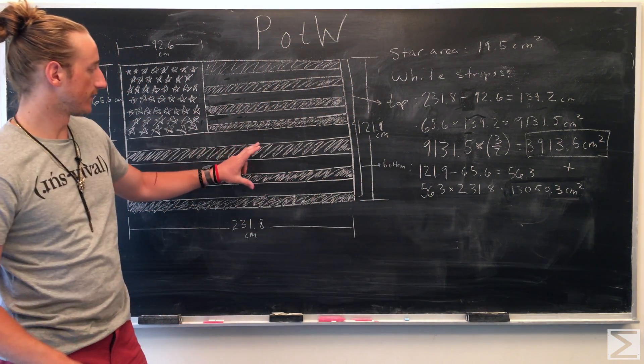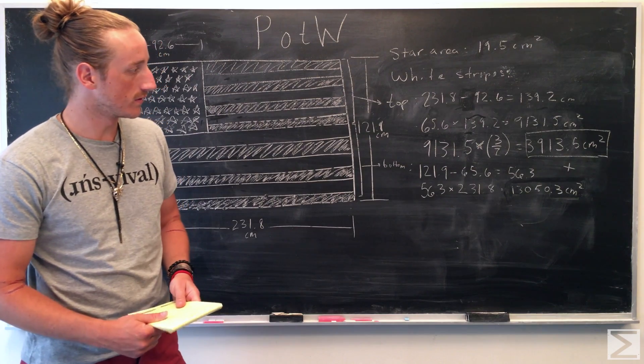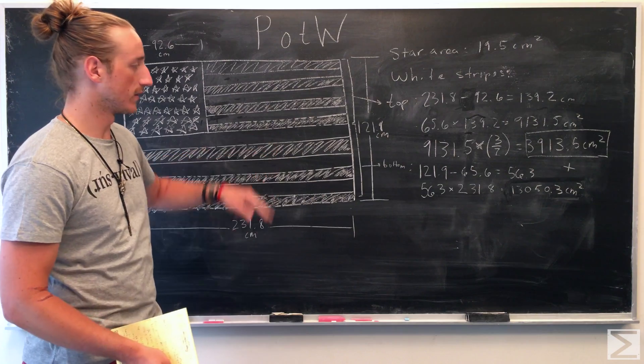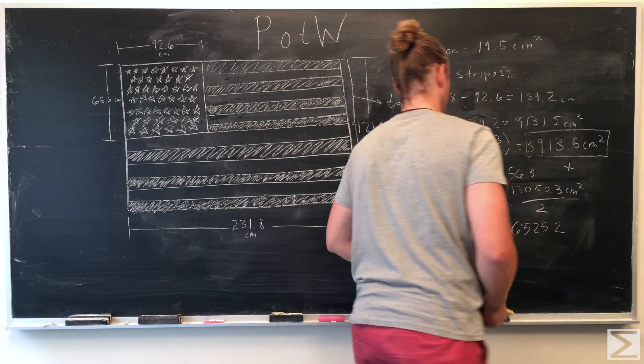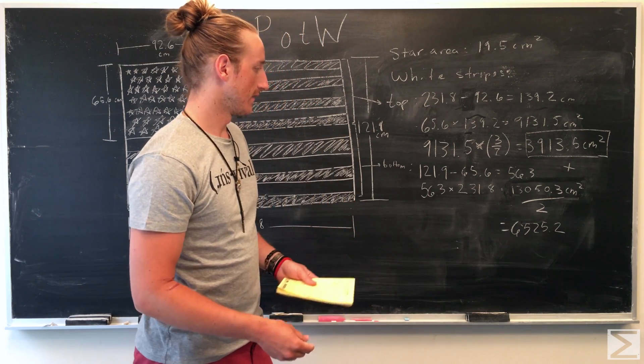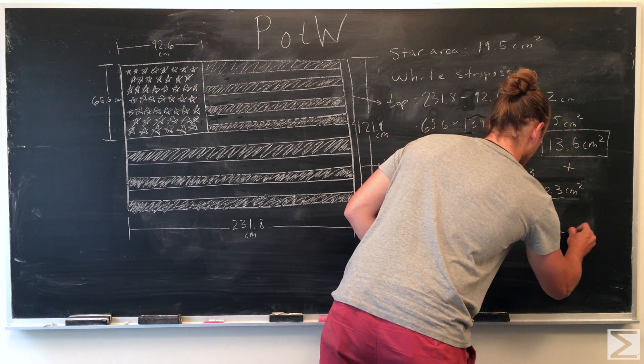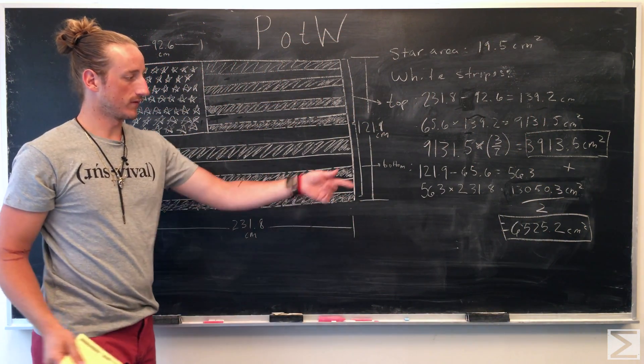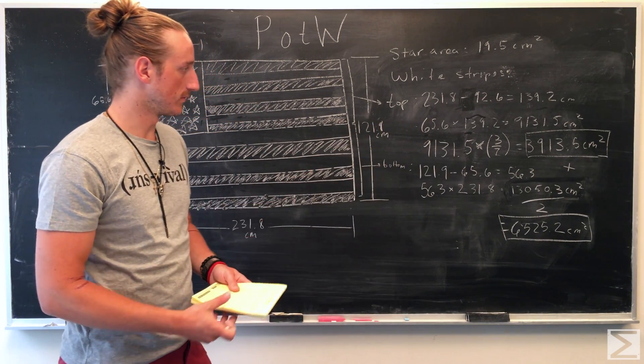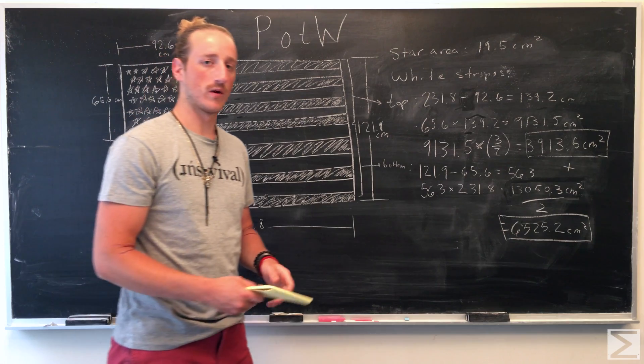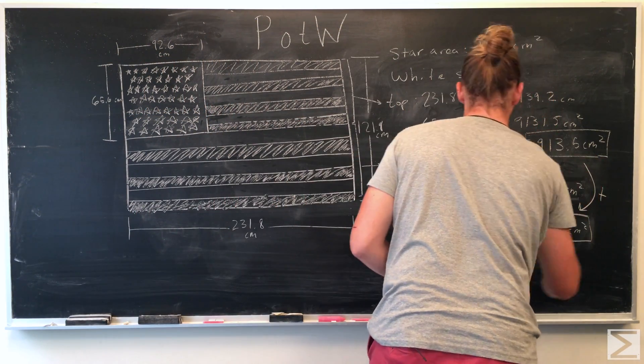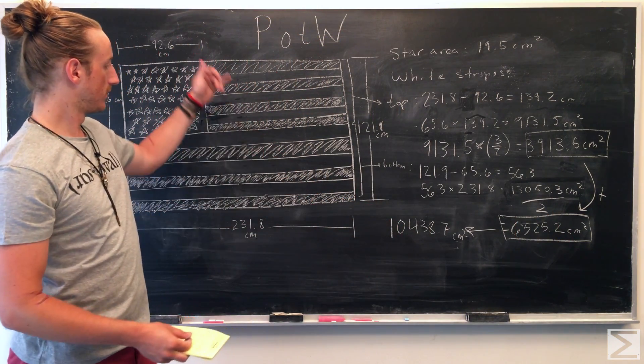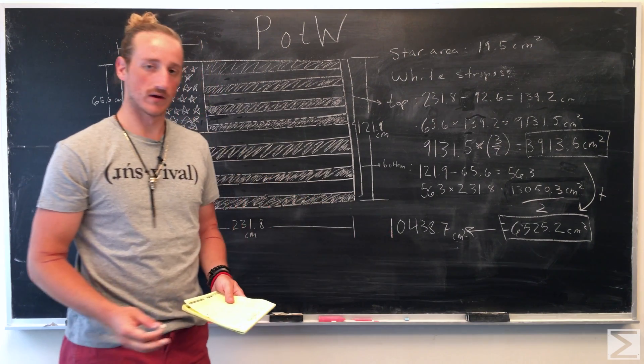We know the total area of this whole bottom rectangle is 13050.3 centimeters squared, so we're just going to take the half of that to find just the white stripes. Here we're rounding everything to the nearest tenth. The area of the white stripes in the bottom half are 6525.2. Adding these two up gives us the total area of the white stripes. The total area of the white stripes for the full flag is 10438.7 centimeters squared.